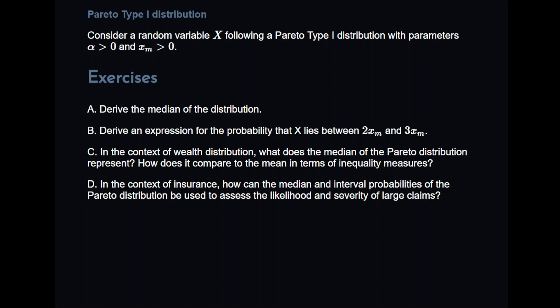Here are our exercises. Derive the median of the distribution. Derive an expression for the probability that X lies between 2XM and 3XM. In the context of wealth distributions, what does the median of the Pareto distribution represent and how does it compare to the mean in terms of inequality measures? In the context of insurance, how can the median and interval probabilities of the Pareto distribution be used to assess the likelihood and severity of large claims? Exercises C and D are essentially short theory questions just to actually motivate the student of business or finance or economics to see the importance of this distribution over the course of their career and how it will be useful in their studies.